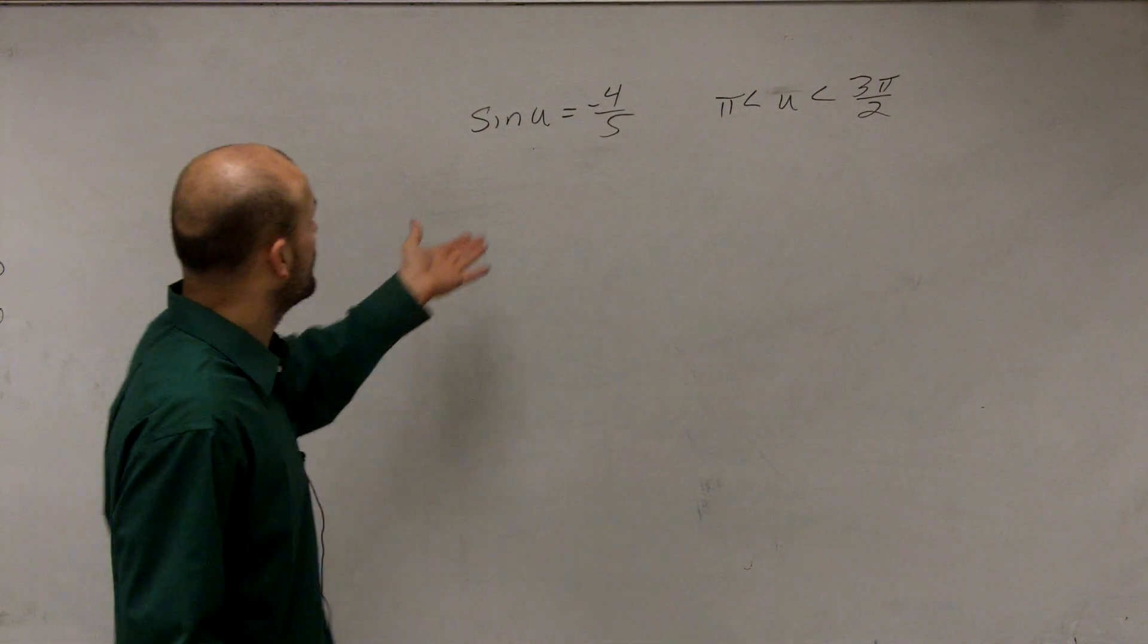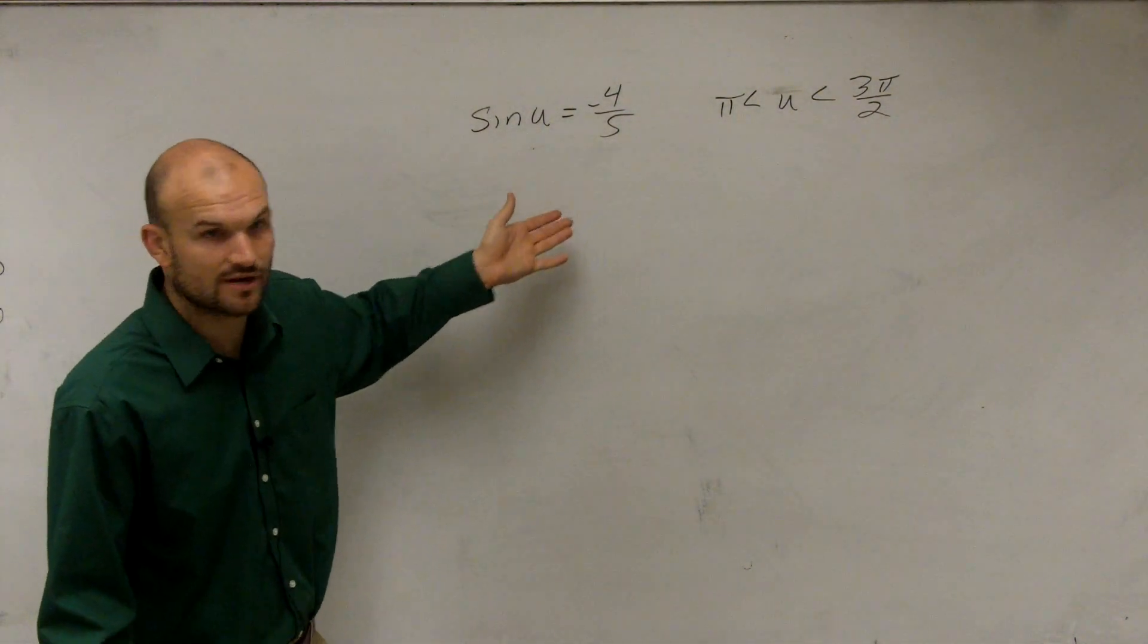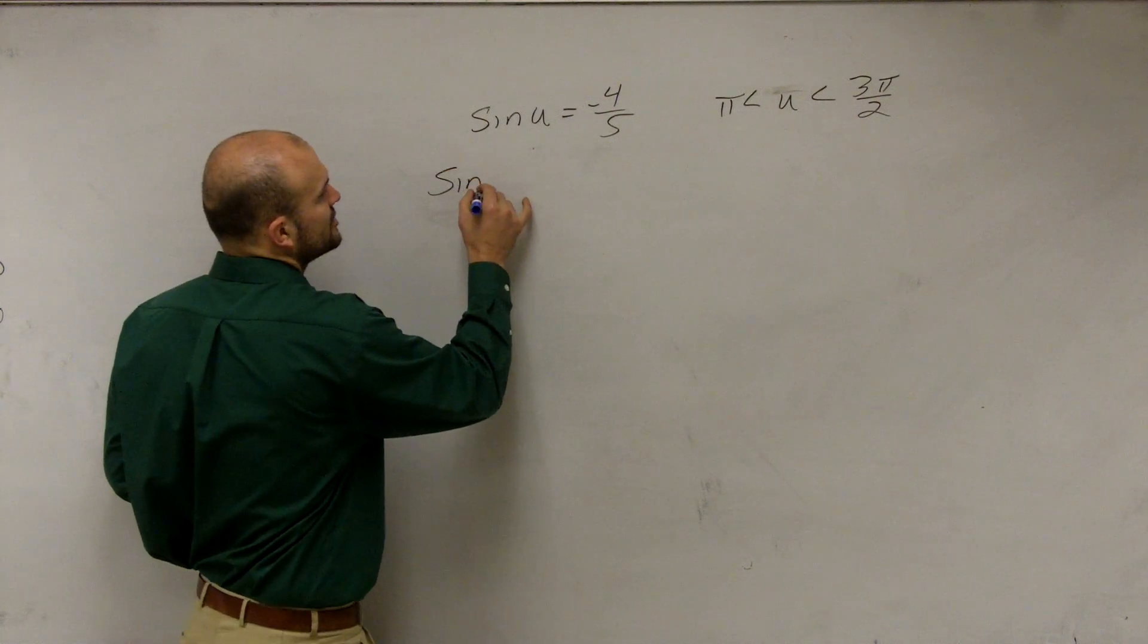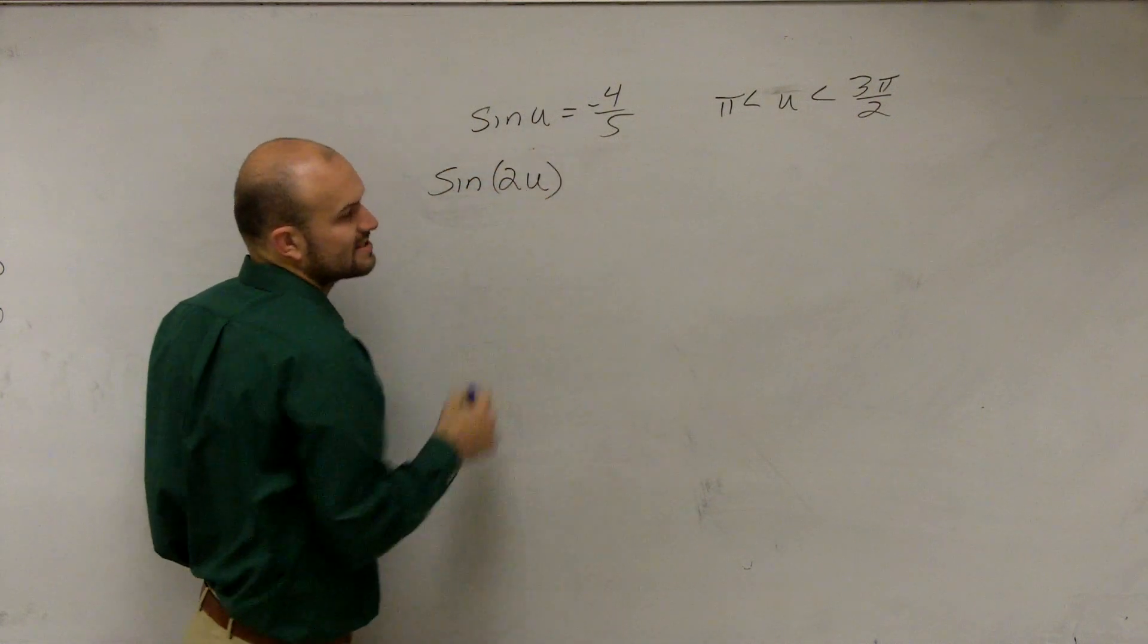All right. So what we have is the sine of u equals negative 4 over 5. And what they want us to do is figure out what the sine of 2u is.